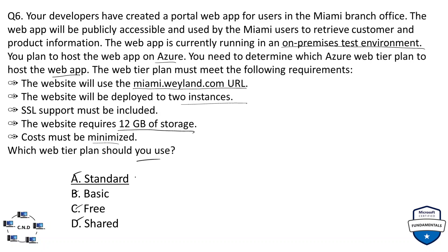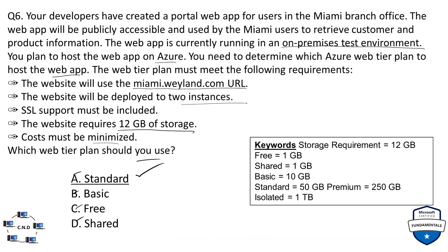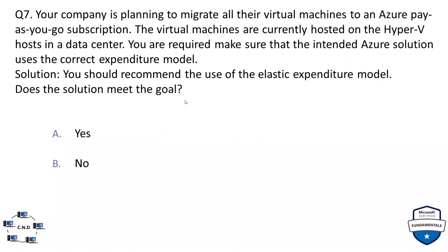The options are: A — Standard, B — Basic, C — Free, D — Shared. The correct option is Standard. The key requirement is 12 GB of storage. The Free plan gives 1 GB, Shared gives 1 GB, the Basic plan gives 10 GB, while the Standard plan gives 50 GB — fulfilling our requirement. Premium and Isolated give more than needed, so the most cost-effective option that meets requirements is Standard.